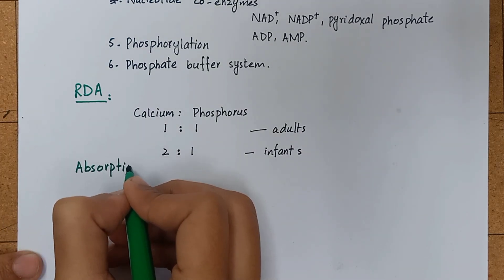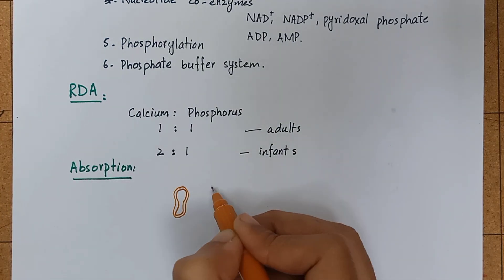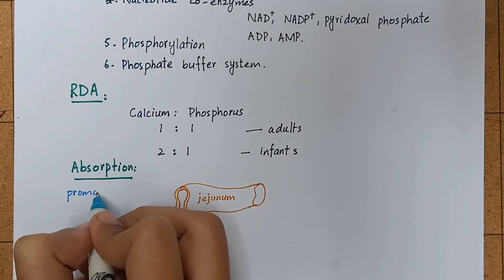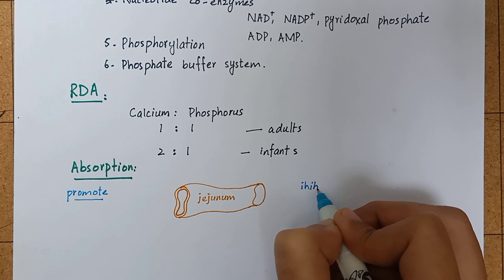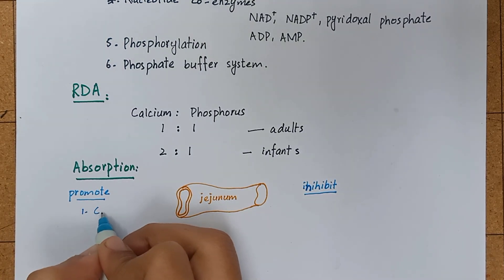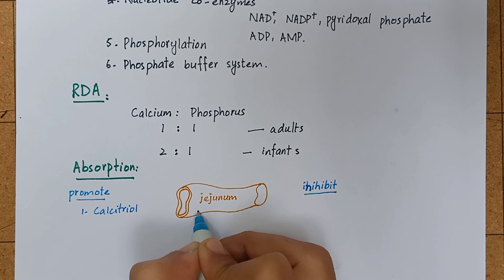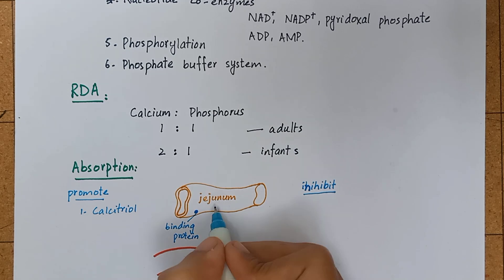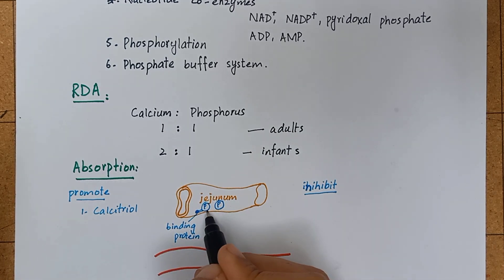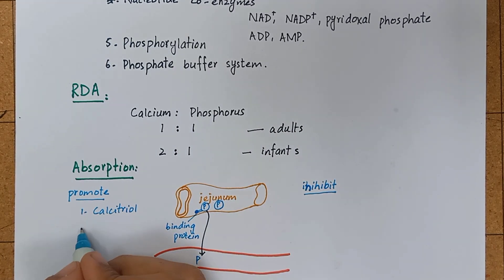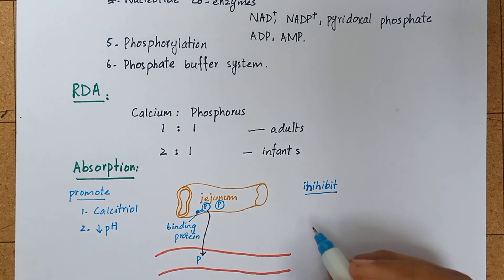Now coming to the absorption. Phosphate absorption occurs in the second part of small intestine, that is jejunum. There are two factors that promote phosphate absorption and two factors that inhibit it. First promoting factor is calcitriol. Calcitriol enhances the synthesis of a binding protein which promotes phosphate uptake along with calcium in a ratio of 1:1. Low pH or acidic environment favors phosphate absorption.